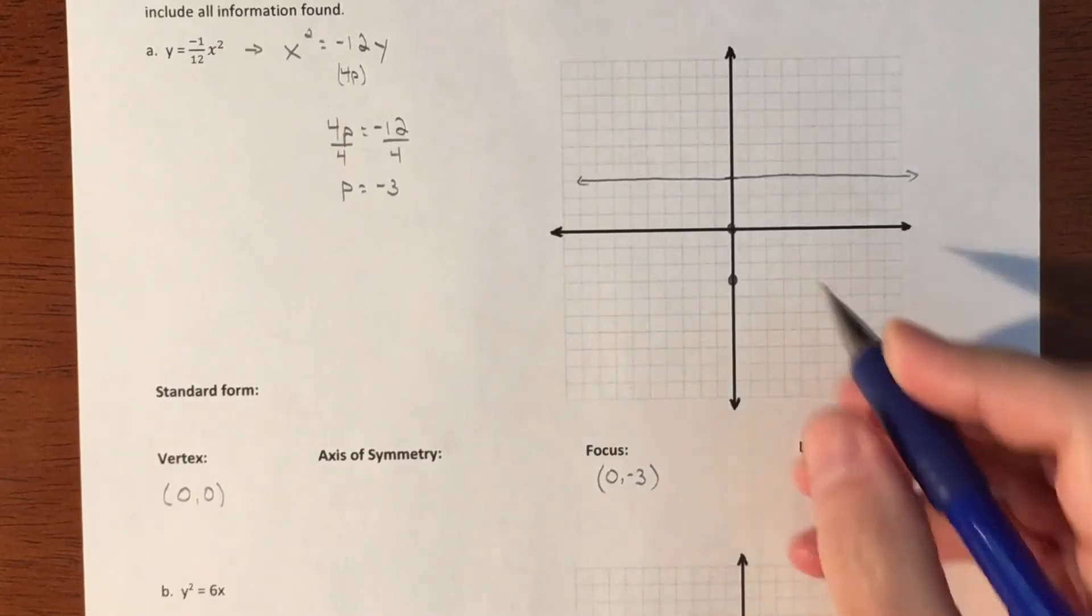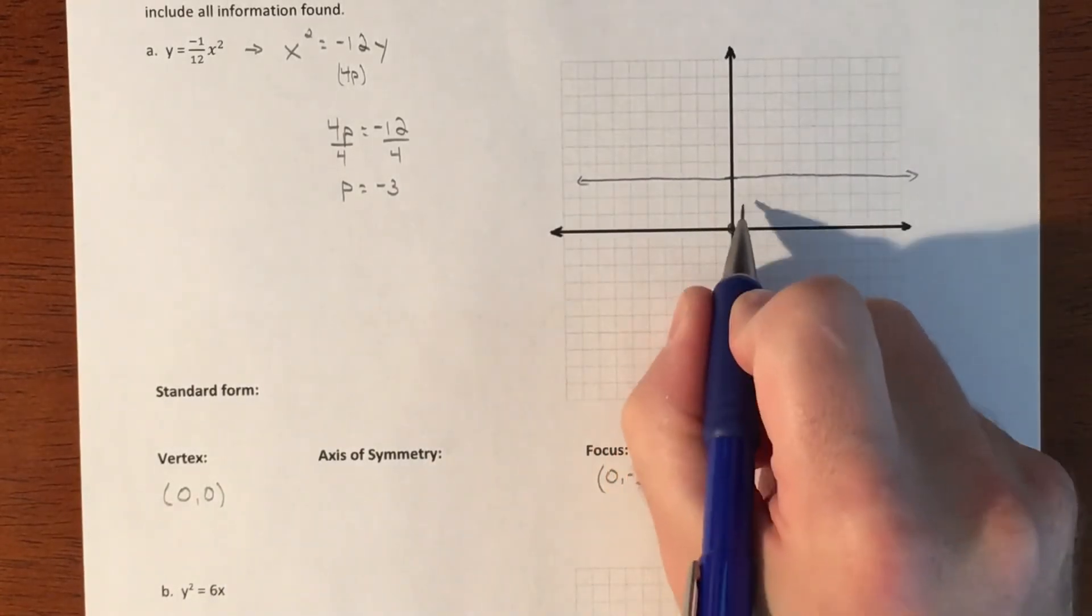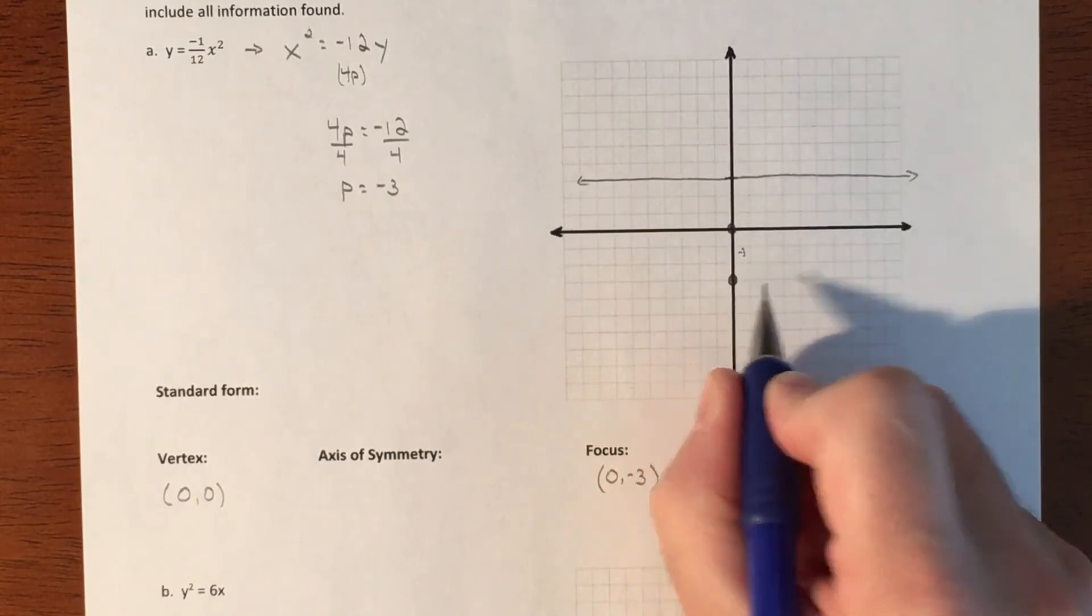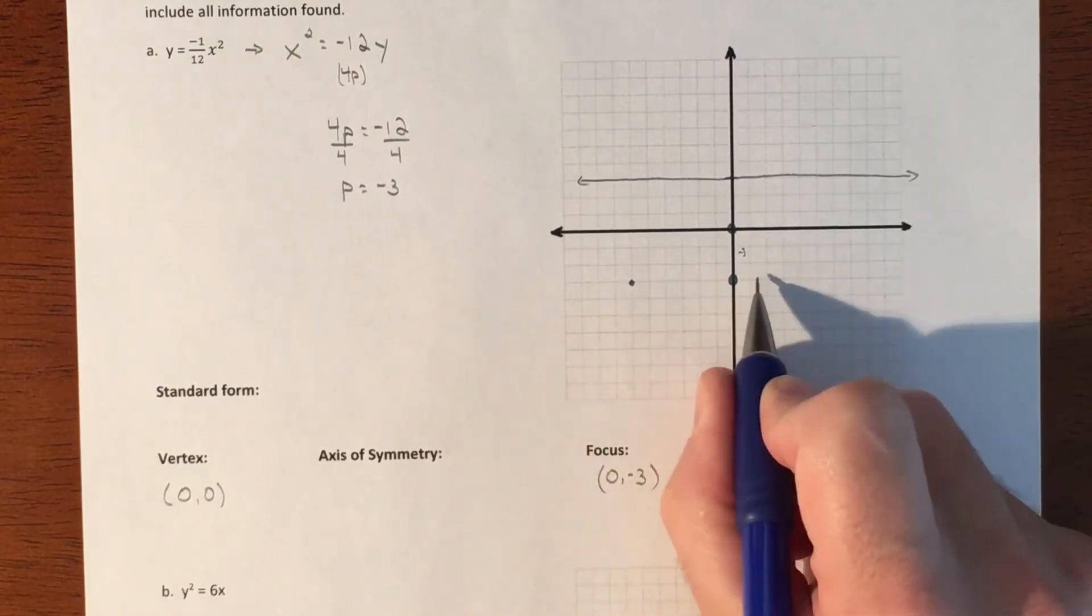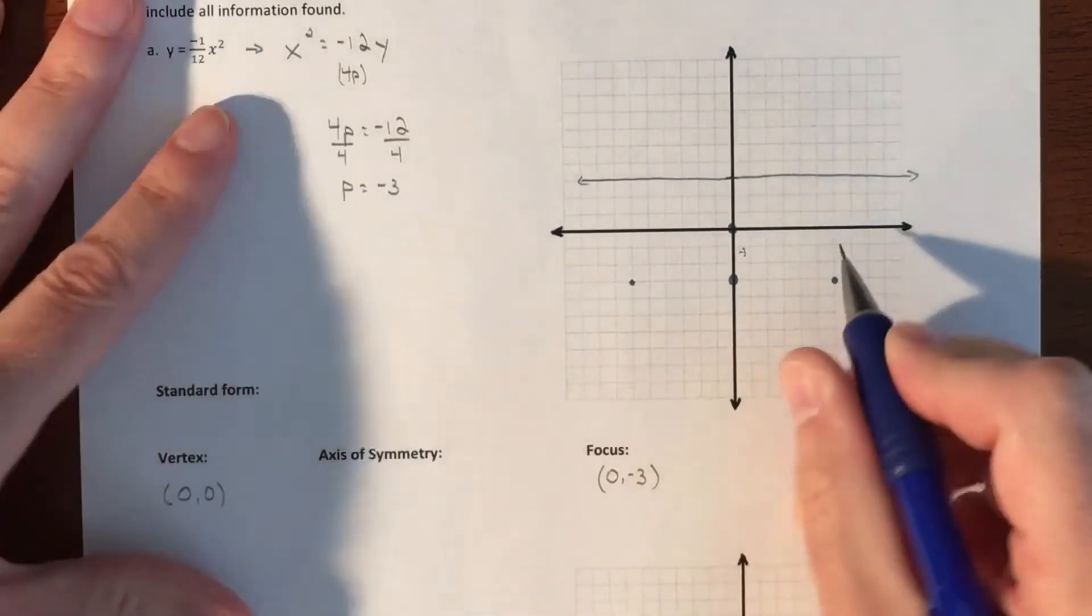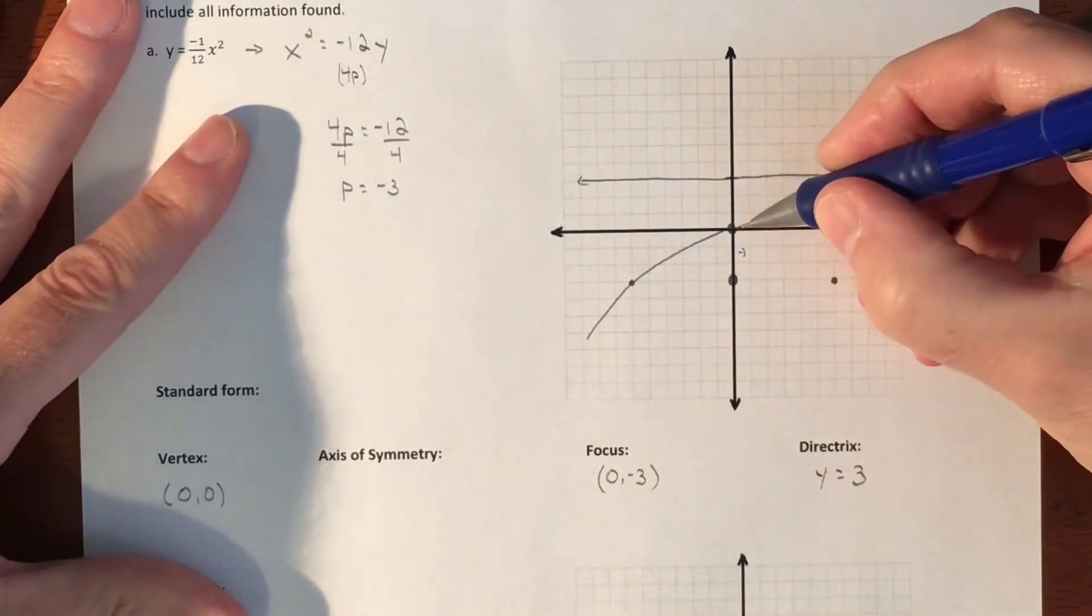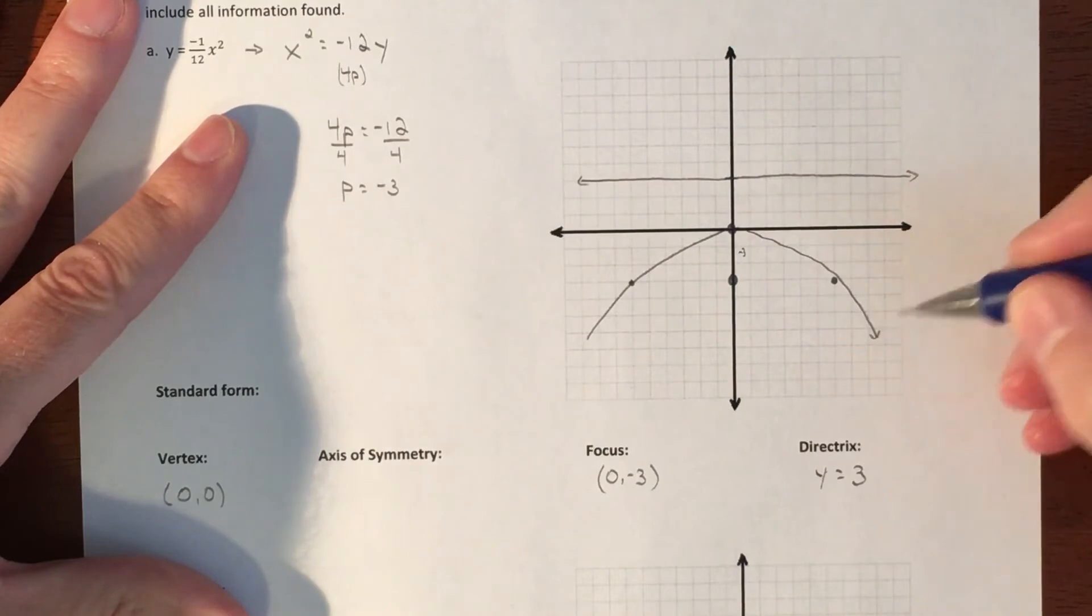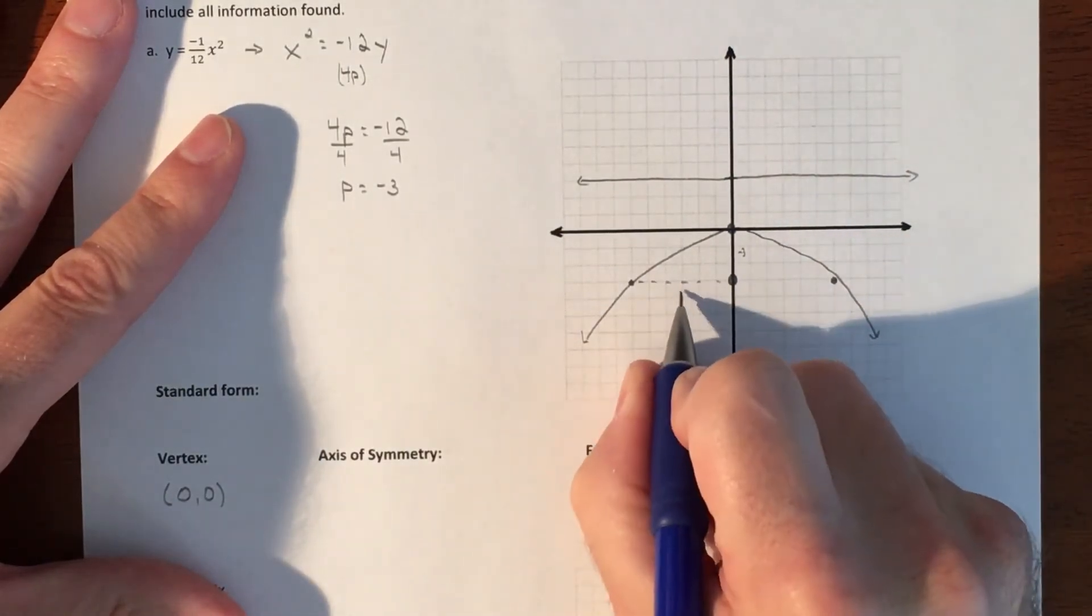And then this distance is 3, negative 3. So we're going to go out 1, 2, 3, 4, 5, 6, because it's twice. 1, 2, 3, 4, 5, 6. And that gets us a rough, accurate sketch of our shape of our parabola. All right, so that distance is 6.